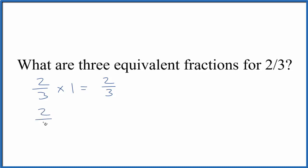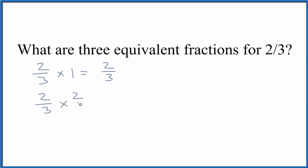But if we had two-thirds and we multiply that by two over two, two over two is the same thing as one. You divide two by two, you get one. So again, we haven't changed the quantity.